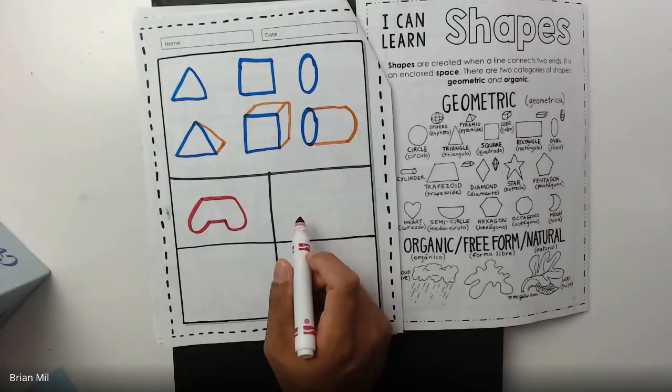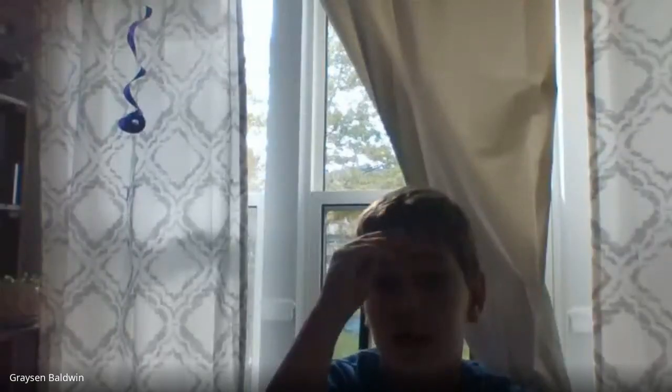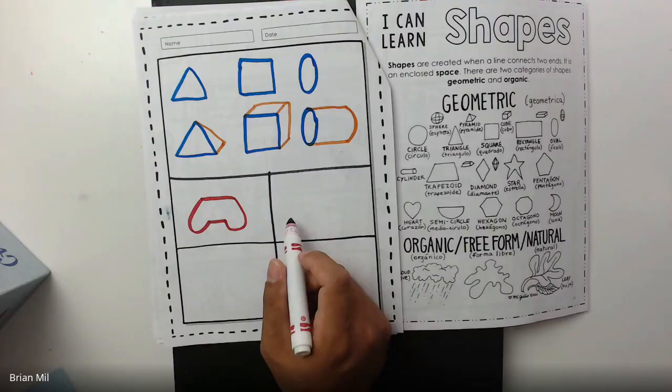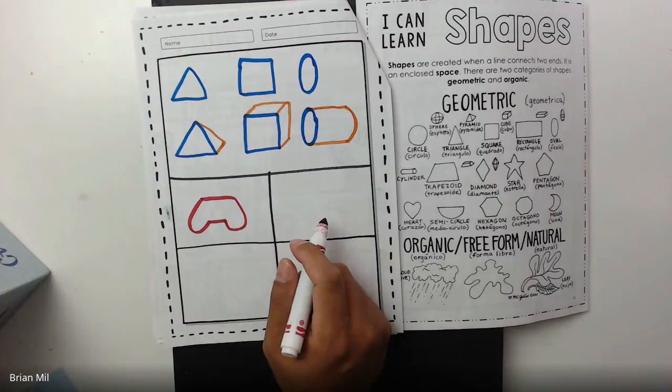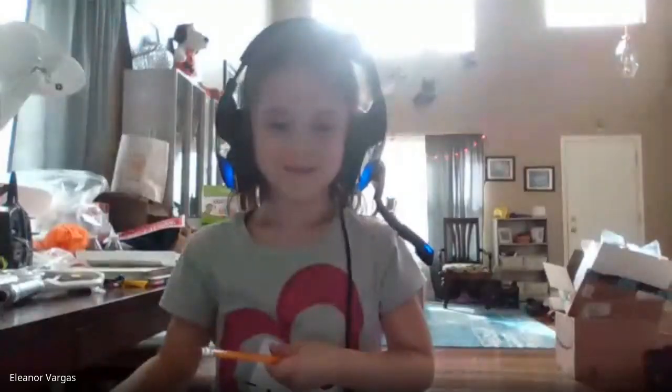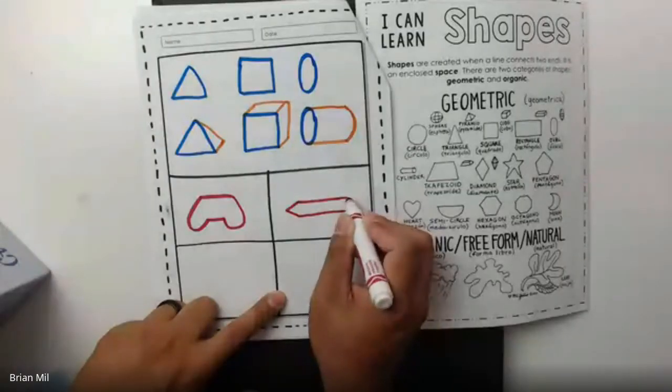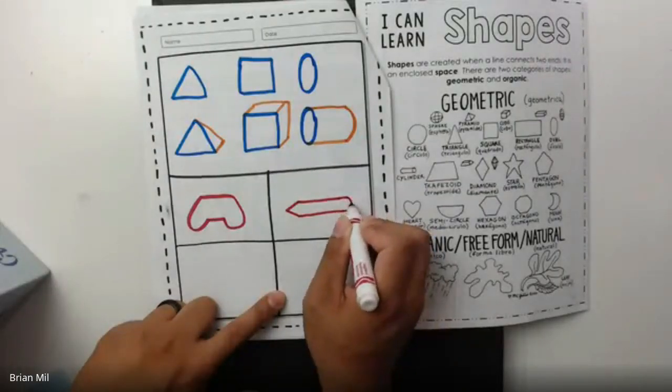Anyone want to give me another one? Ellie, give me an organic shape. A pencil. Good job. It's kind of like a triangle and a rectangle put together. But since it's together, it's its own shape. So, there. I drew a pencil.